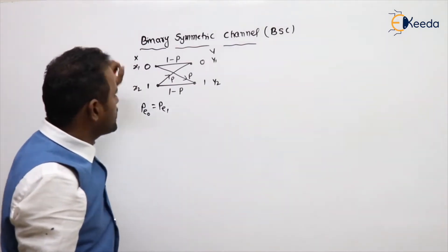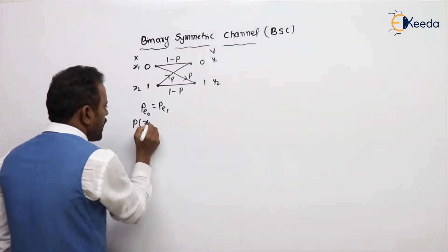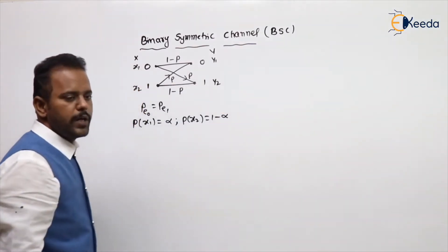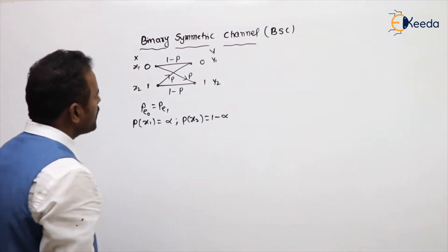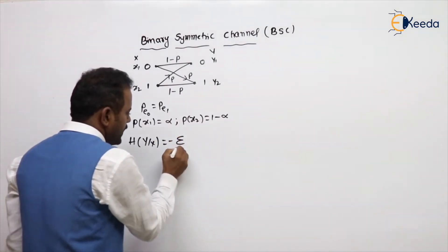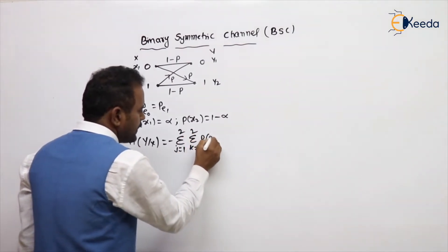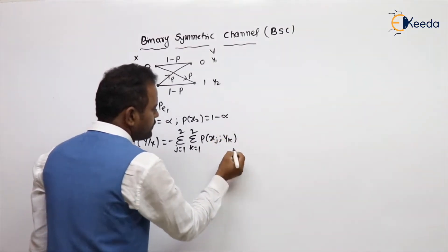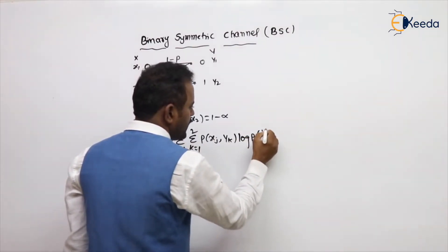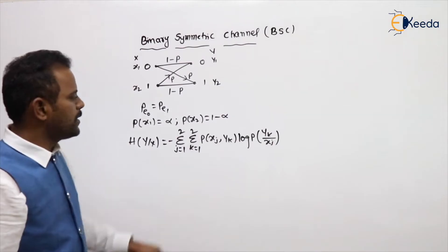The binary symmetric channel is important. If we call the probability of x1 as alpha, then the probability of x2 is 1 minus alpha, because total probability is 1. Now we calculate the conditional entropy of the channel, H(Y|X). The formula is: minus summation over j equals 1 to 2 and k equals 1 to 2 of the joint probability P(xj, yk) into log of the conditional probability P(yk|xj).